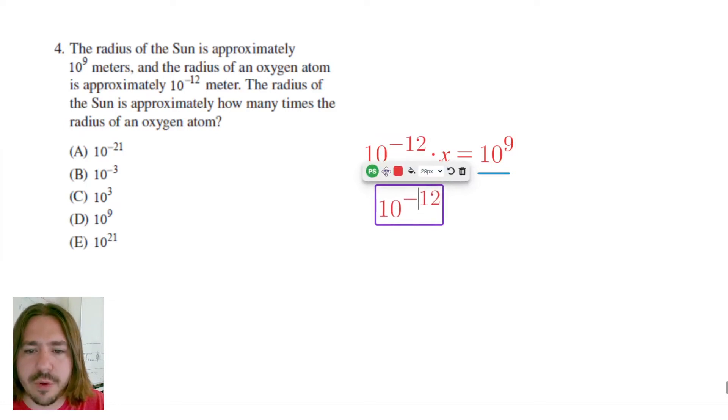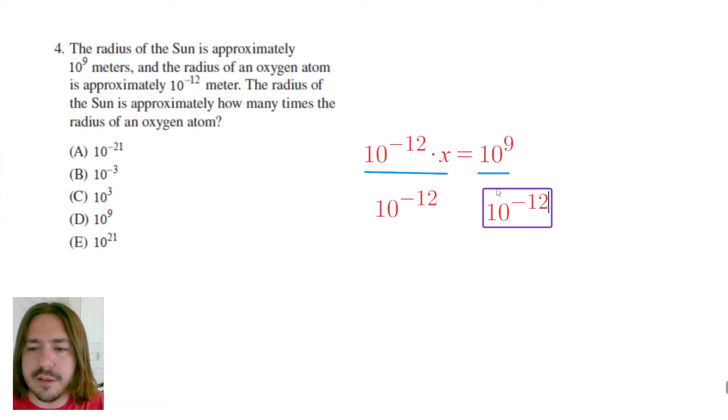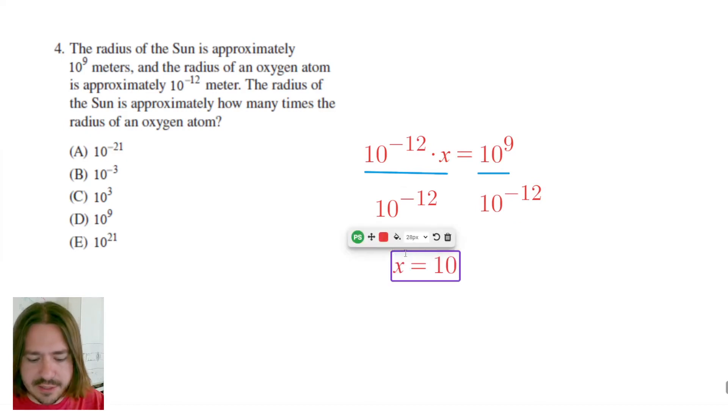Now this is going to leave us with essentially our answer but not simplified. We're going to have X equals 10 to the ninth divided by 10 to the negative 12th.